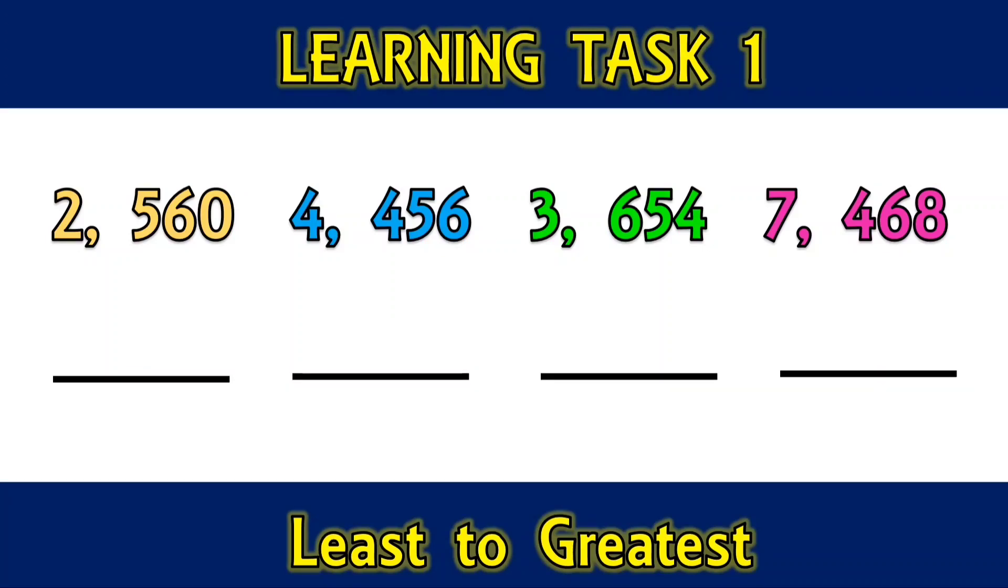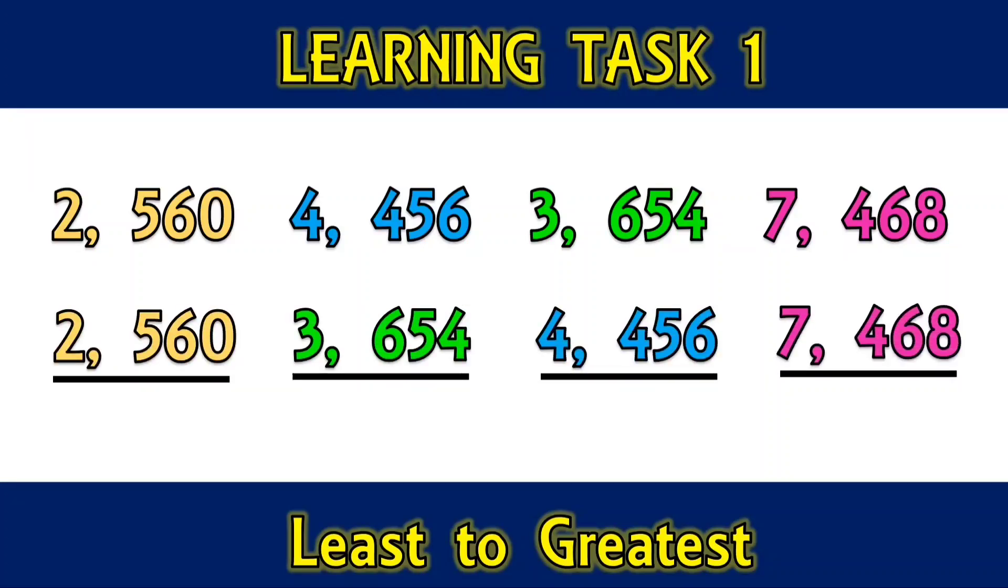Select the number which cannot arrange in the required order. 2,516, 4,456, 3,654, and 7,468. Arrange these numbers from least to greatest. 2,516 is the least number and the greatest number is 7,468.